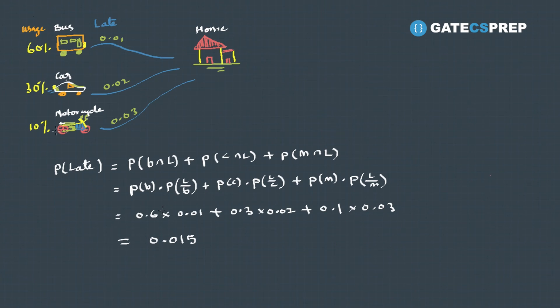...that's the bus, car, or motorcycle. And here are the possibilities of happening of these three events and the probability of being late via these three modes. In the question, we are asked to calculate the probability of being late, so what we have done, we have calculated because of the bus, then we have calculated because of the car and because of the motorcycle.